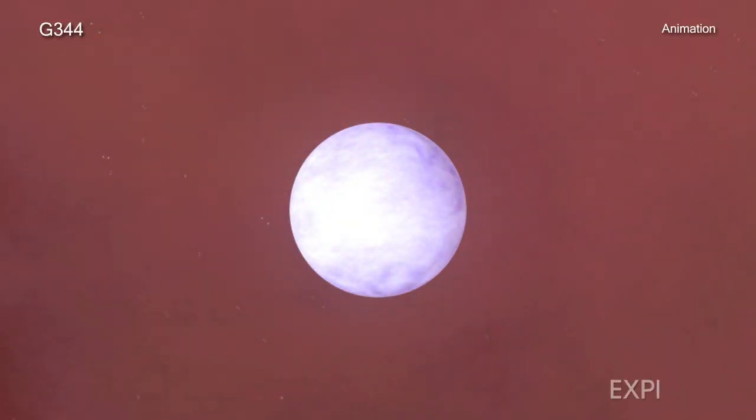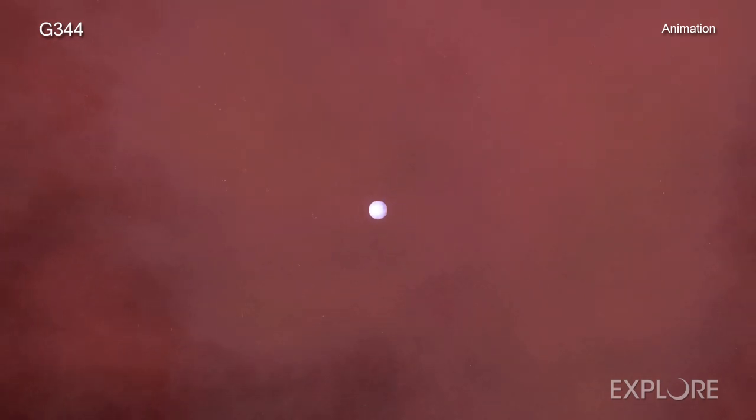White dwarfs are among the most stable of stars. They are stars that have exhausted most of their nuclear fuel and shrunk to about the size of Earth, yet still contain about the same mass as the Sun.